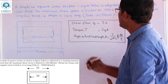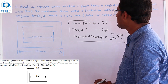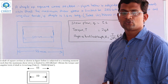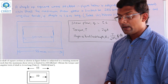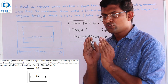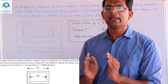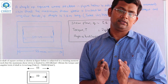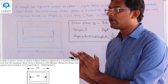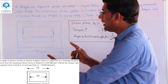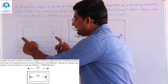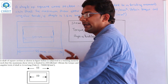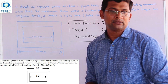We are given the value of G as 70,000 N per mm squared. From the figure, you can see the dimensions — the inner to inner value and the outer to outer value.